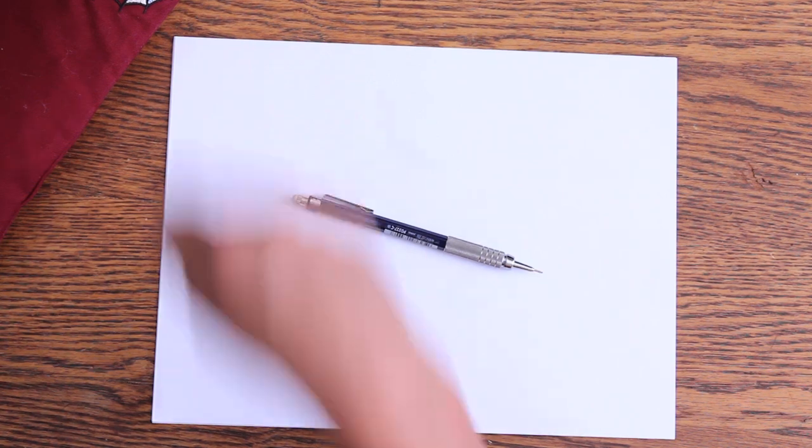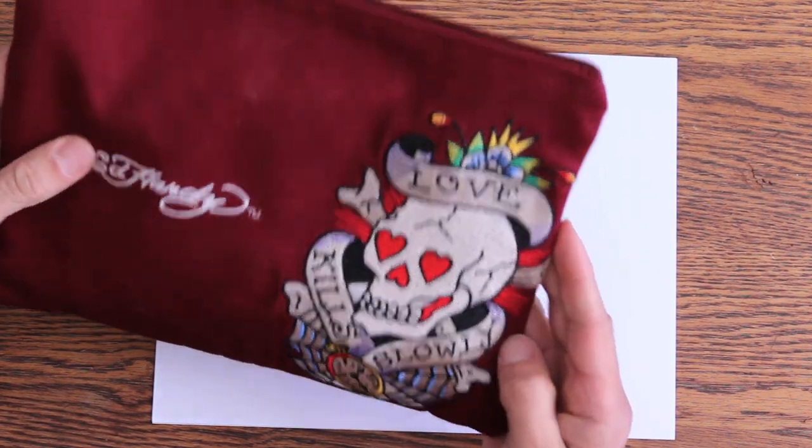The first thing you're going to want to do is get completely naked and then put some clamps on your nipples. Then you're going to want to get out your Ed Hardy bag full of colored pencils.